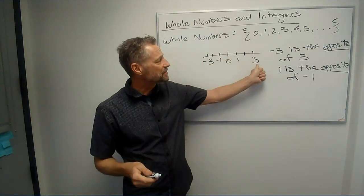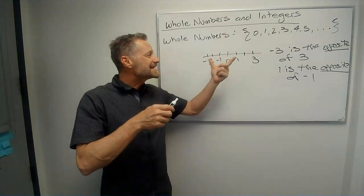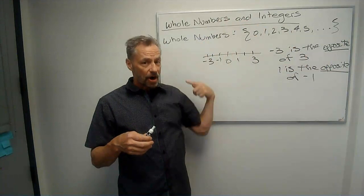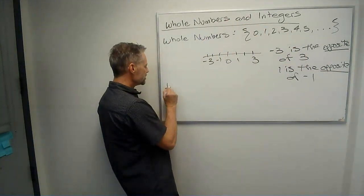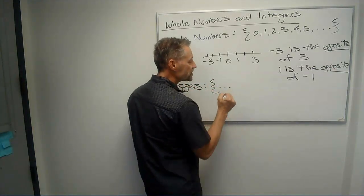And so it goes both directions. If negative 3 is the opposite of positive 3, positive 3 is the opposite of negative 3. Now, if we take the set of all whole numbers and their opposites, that's what the set of integers is. So the integers, let's go dot, dot, dot...